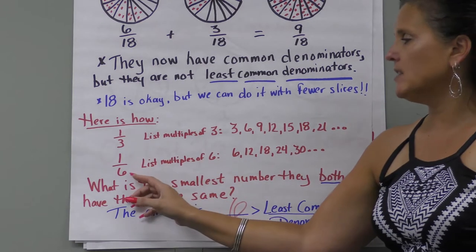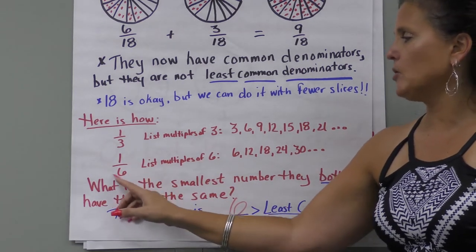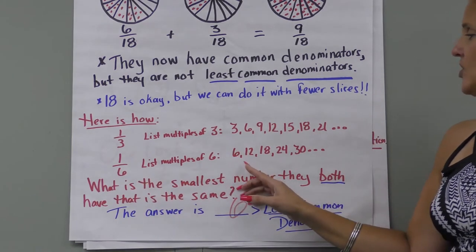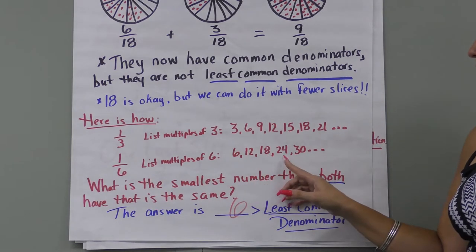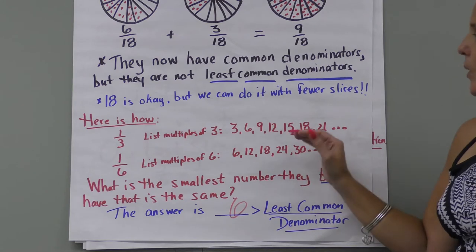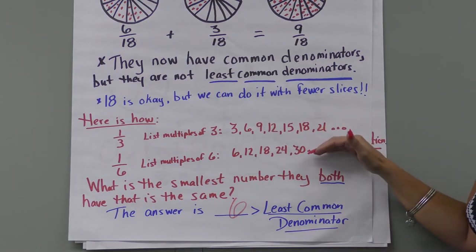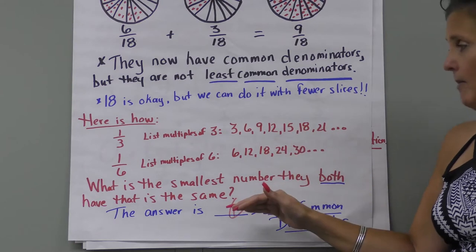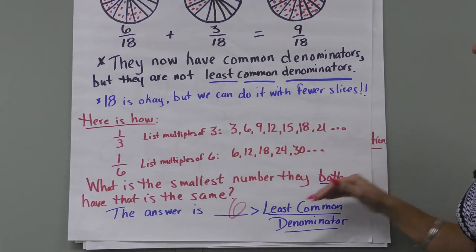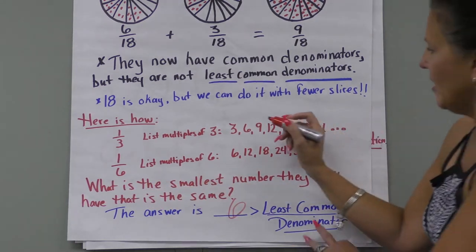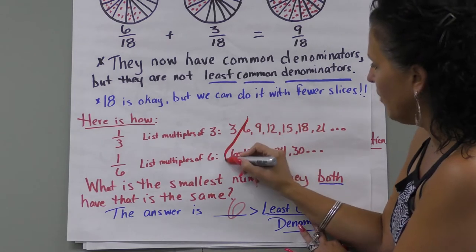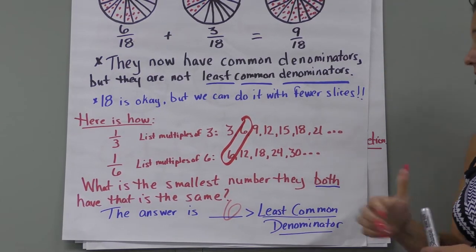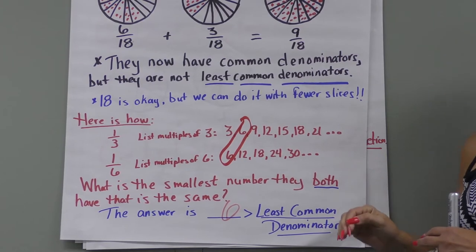Then we list the multiples of six: six, twelve, eighteen, twenty-four, thirty. We compare these two lists to look for the lowest number they have in common — the smallest number that appears in both lists. Looking right here, it's six. So six is our least common denominator.